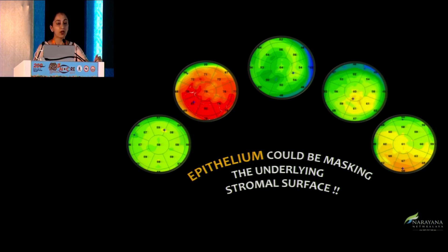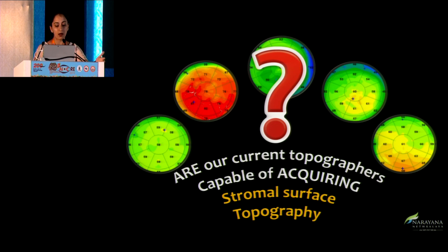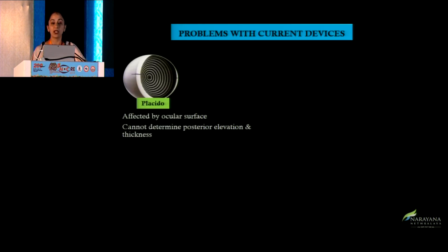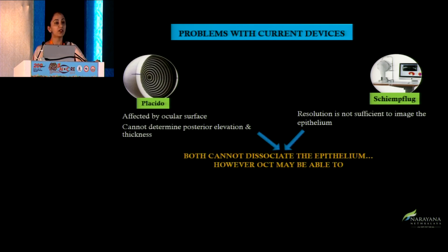Looking at the many modes of epithelial healing, the answer is yes. But then the question is: are our current topographers capable of acquiring the stromal surface topography? Are they enabled enough? We tried to see what topographers are available, but the answer was no. The limitations of current topographers — the Placido and the Scheimpflug — are that they cannot dissociate the epithelium. OCT topographers can do that, but the resolution is not strong enough.